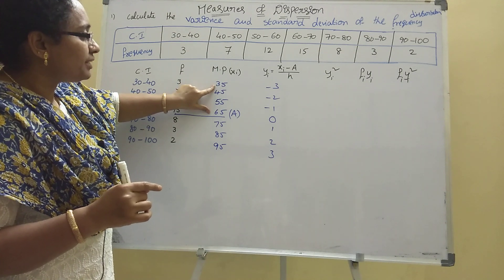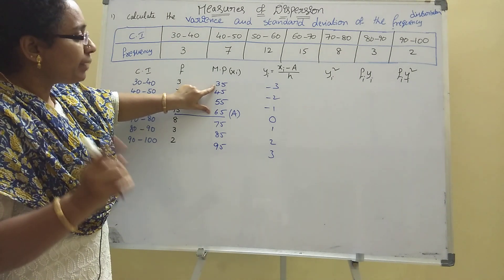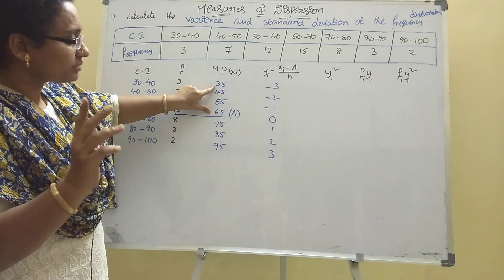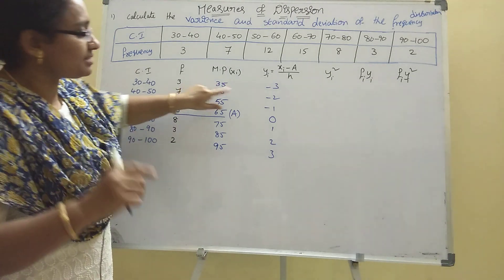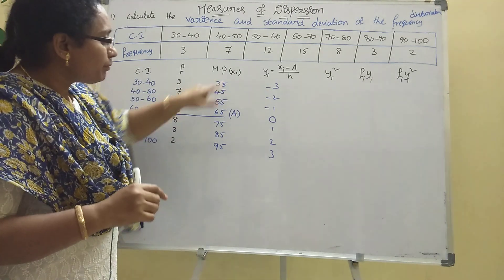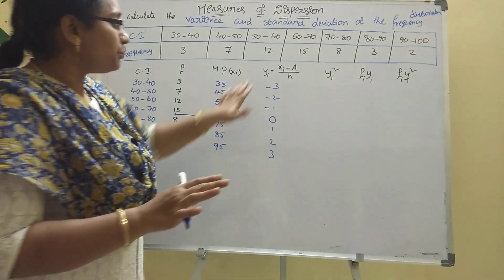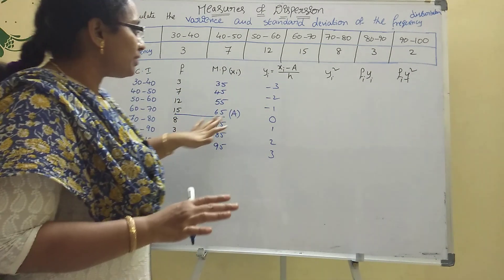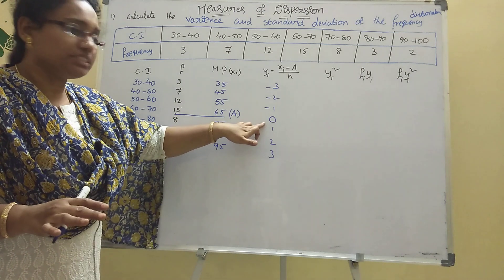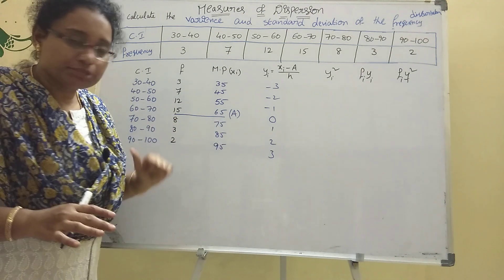For example, xi = 35, a = 65: (35 − 65) / 10 = −30 / 10 = −3. So yi = −3. The yi column has negative values on one side and positive values on the other, with 0 in the middle.